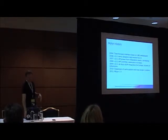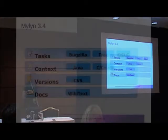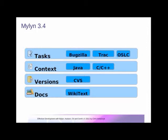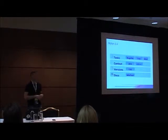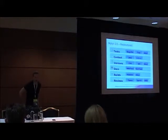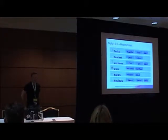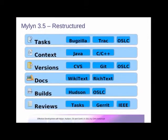The majority of the demos today will involve Mylyn 3.5. In 3.4, Mylyn was broken up into four main components: the Tasks component with integrations with Bugzilla, Trac, and other task-based systems; the Context component, which integrated with Java JDT and CDT; the Versions component, which is CVS; and a small side project called the WikiText Docs component for wiki-type stuff, useful if you're editing wikis within Eclipse or generating documentation.